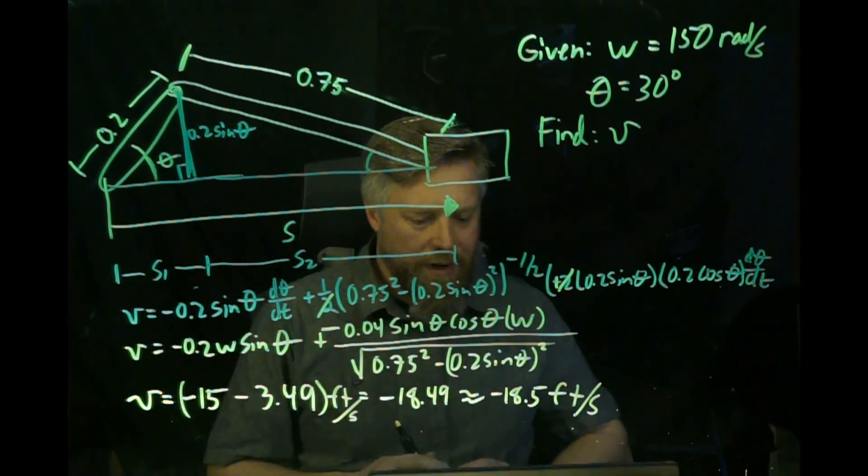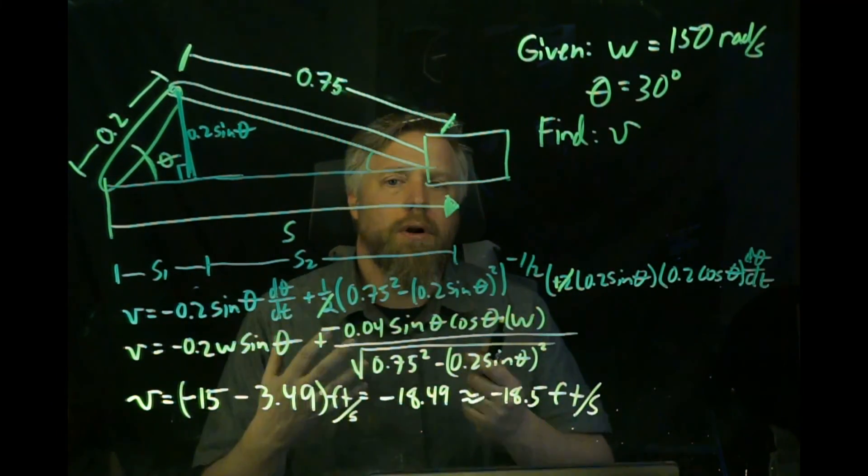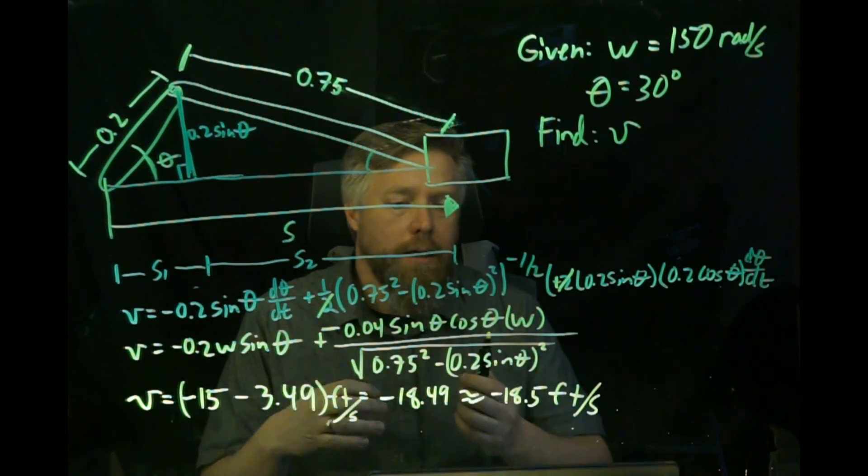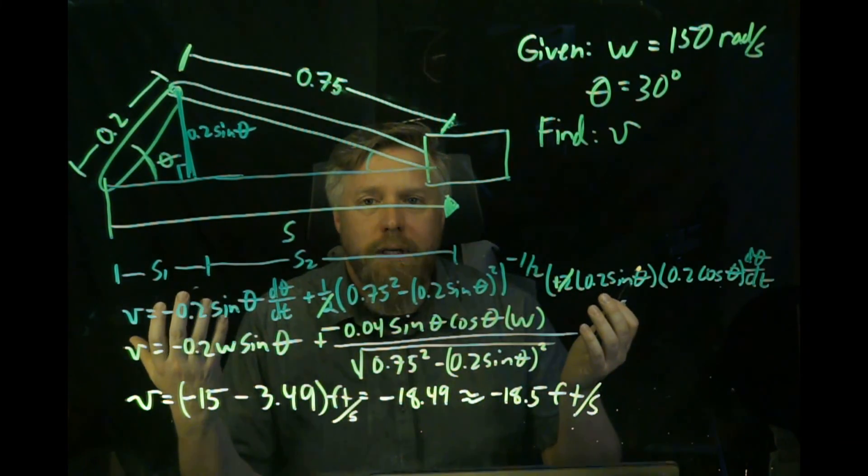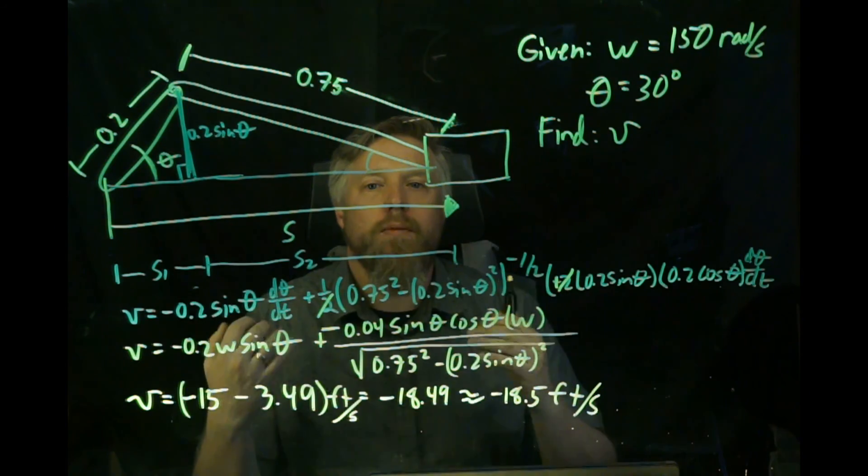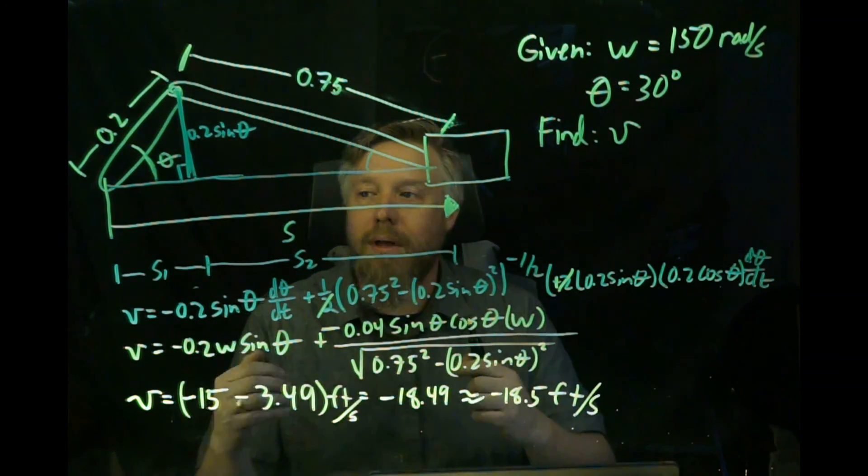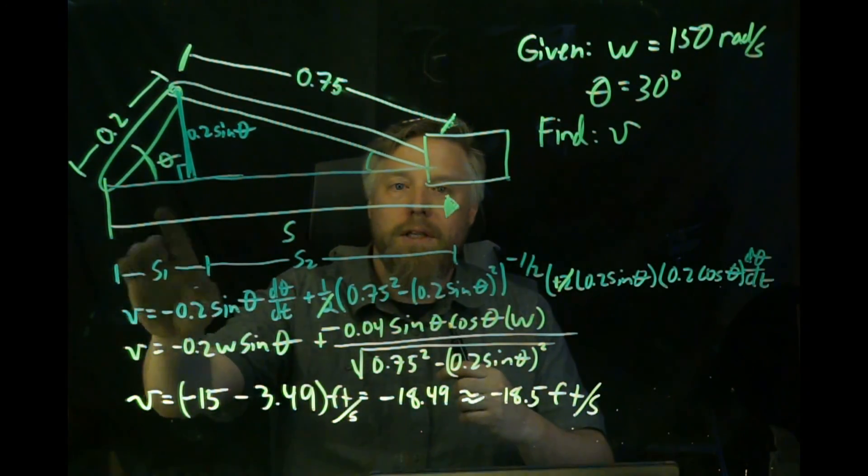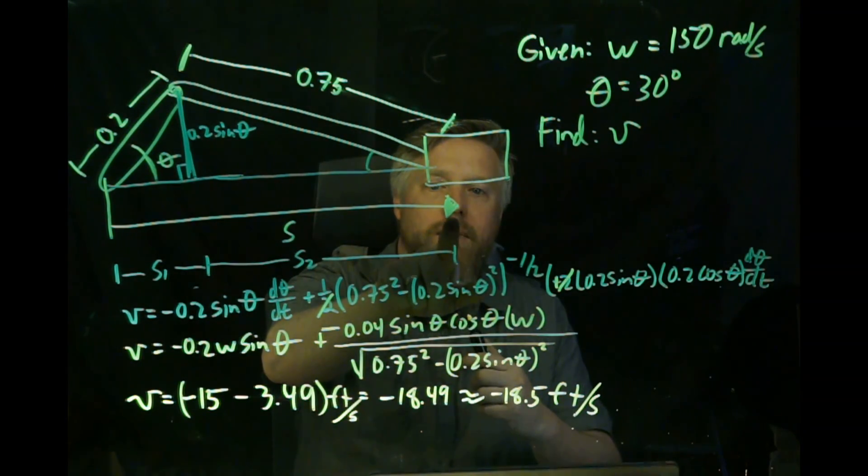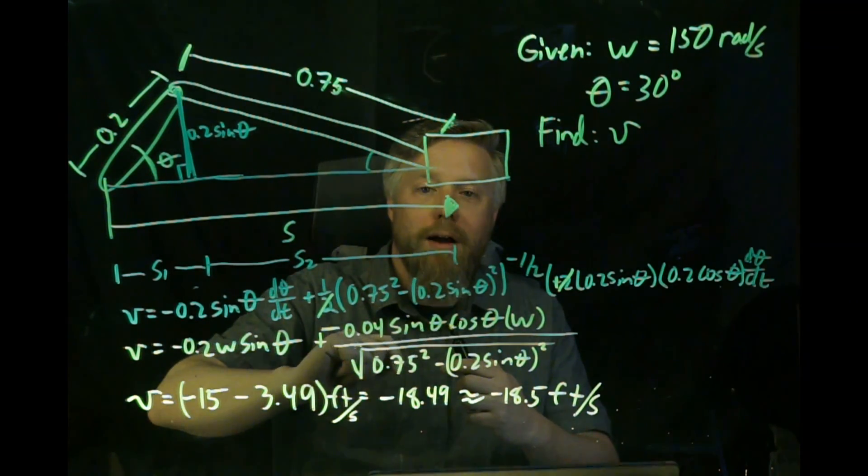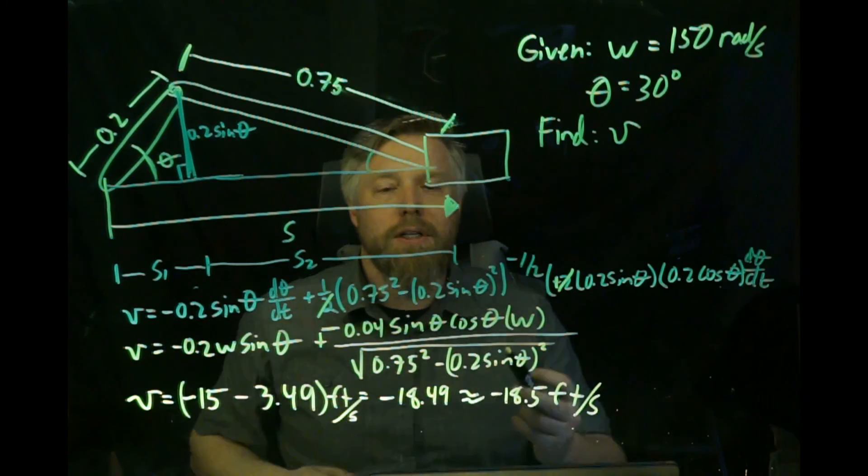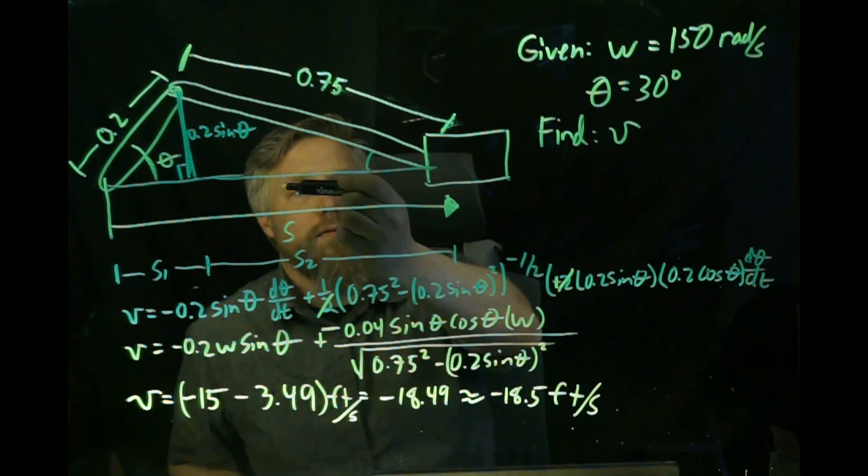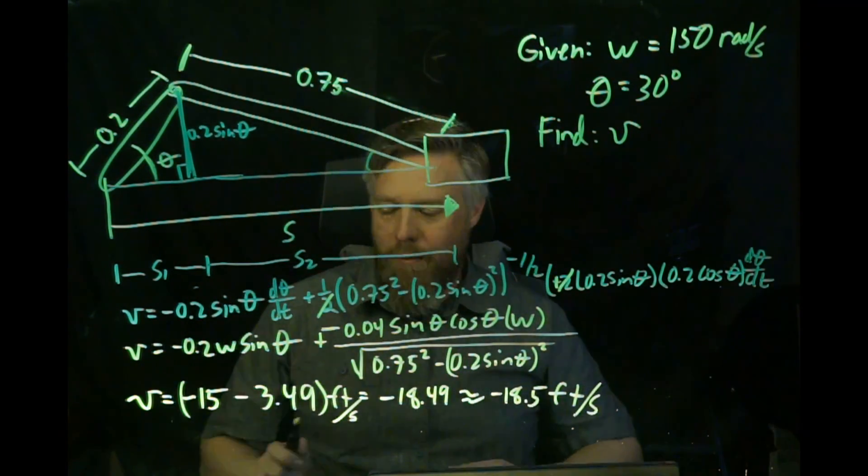So what does that mean? We always have to interpret our answers and understand what they mean. So negative—well, how do we know what a negative means? It's because at the beginning of the problem we set up our coordinate system. Remember our coordinate system is the datum. Our arrow always goes from the datum to the object. You can see I put a nice big arrowhead on this. Make sure you're using your arrowheads. That arrowhead tells me what positive means. Positive means moving this way. Of course, we got a negative, so it means the piston is moving 18.5 feet per second to the left. And we've answered that problem.